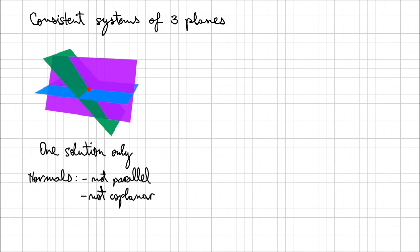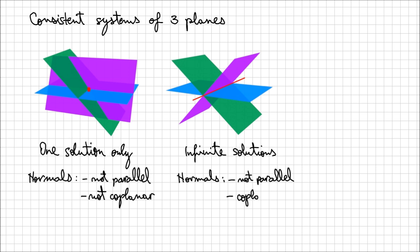Another situation in which you can have three consistent planes is where the three planes are all intersecting on the same line of intersection. So you have basically an infinite number of solutions, those solutions being given by the equation of this line of intersection. In this case, the normals are not parallel, but they are coplanar — you can place them all in the same plane.